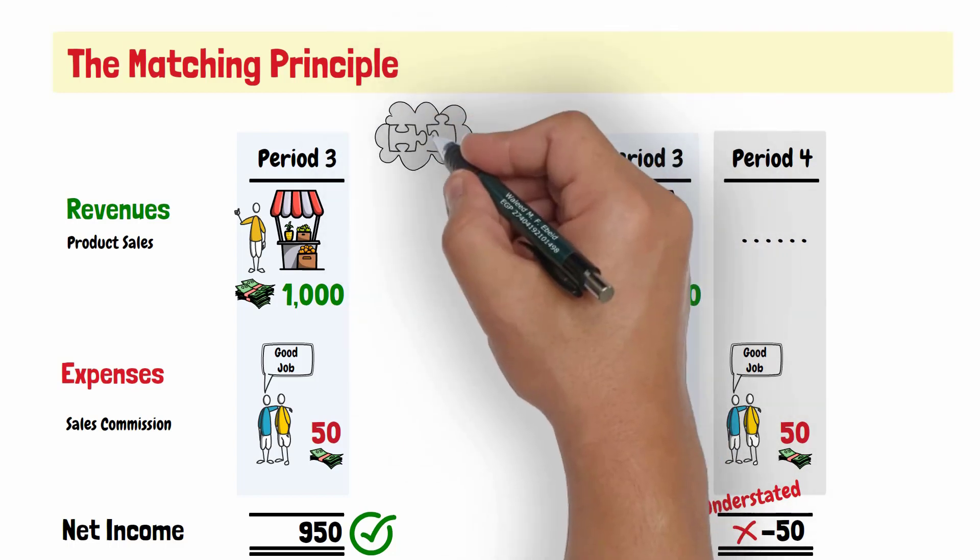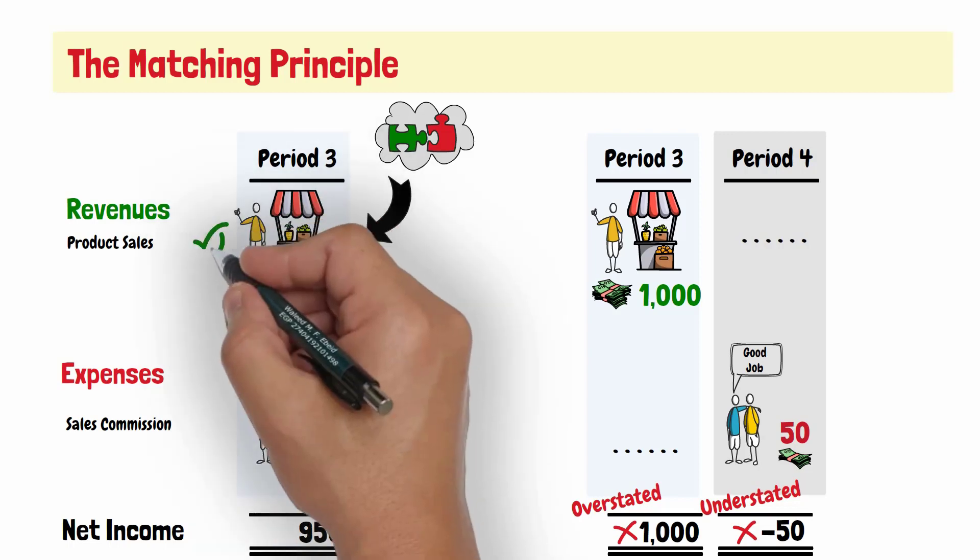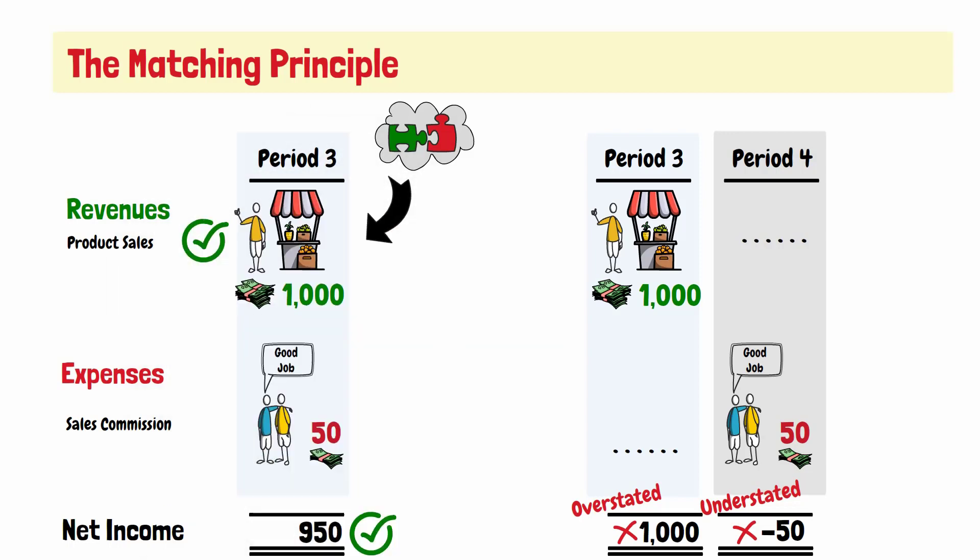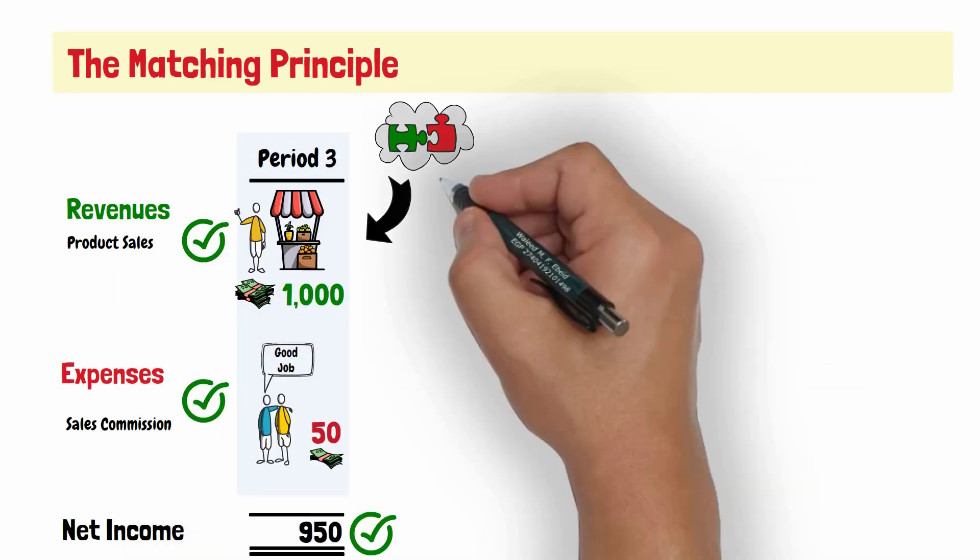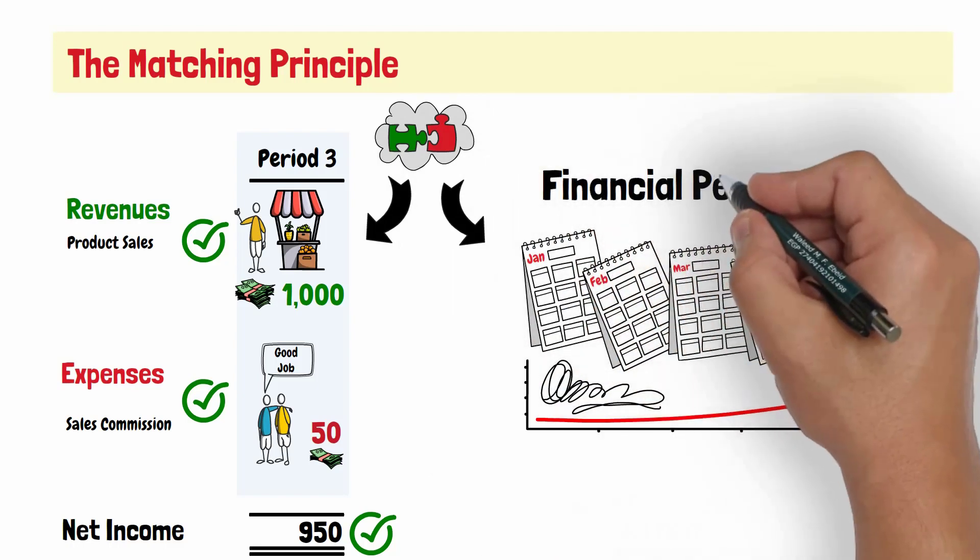Applying the matching principle ensures that the income statement for a specific accounting period accurately reflects the revenues for that period with its related expenses, and thus gives the user of the financial statements an accurate picture of a company's financial performance.